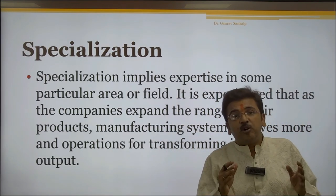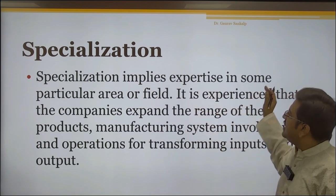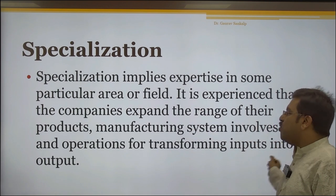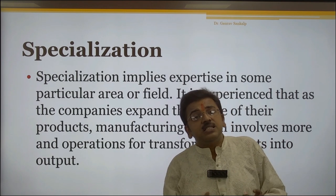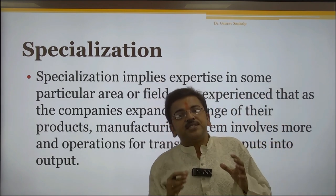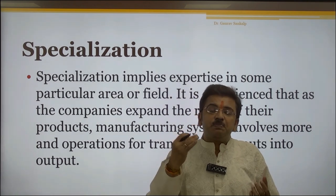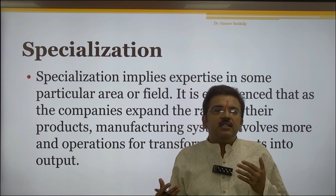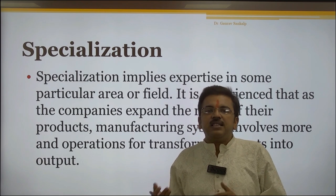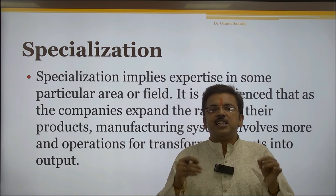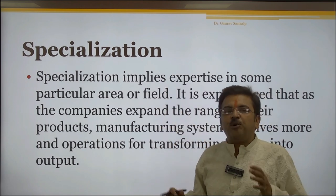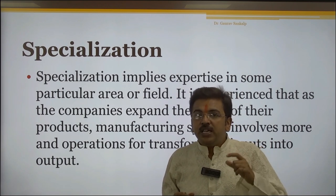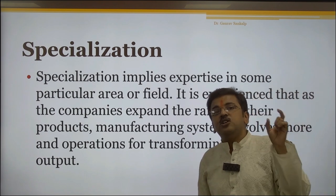The third important point is specialization. Specialization implies expertise in some particular area or field. It is the experience that as companies expand their range of products, the manufacturing system involves more operations for transforming inputs into outputs. Whenever we talk about specialization, we talk about products that are specialized by specific features. If you are going to buy a mobile, there are different mobiles in the market — some people like storage, some like the camera, some like gaming activity. As per the demand of the customer, you make that specific product, so specialization is very important.